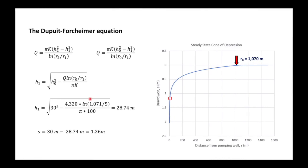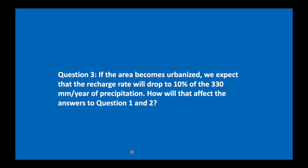The next question: if the area becomes urbanized, we expect the recharge rate will drop to 10% of precipitation, which is 330 millimeters per year. How will that affect the answers to questions one and two?